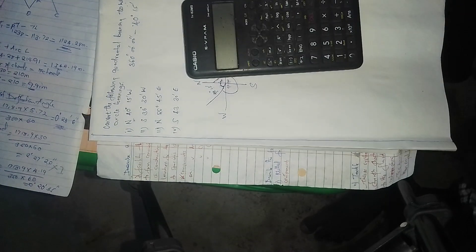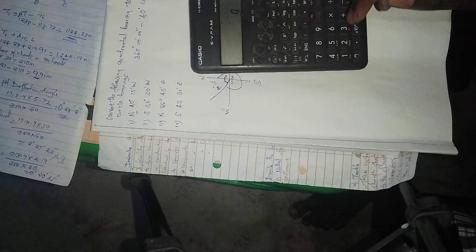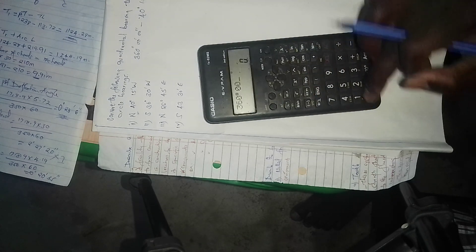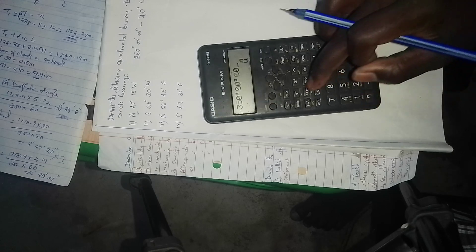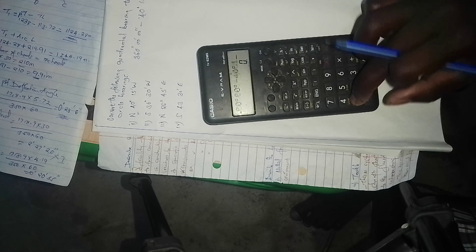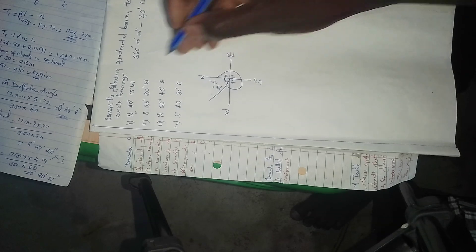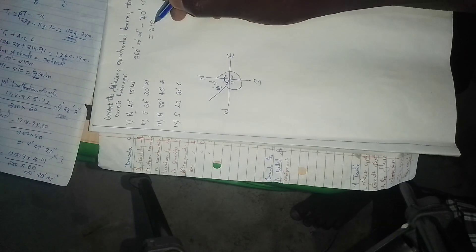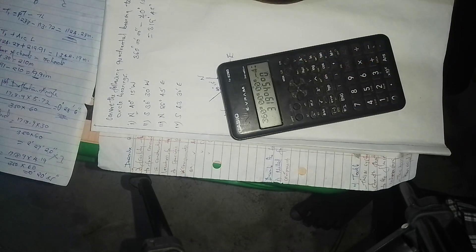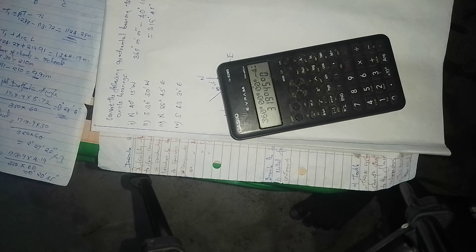So I have my calculator here. 360 degrees zero minutes zero seconds minus 40 degrees 15 minutes. So the whole circle bearing should be 319 degrees 45 minutes zero seconds.